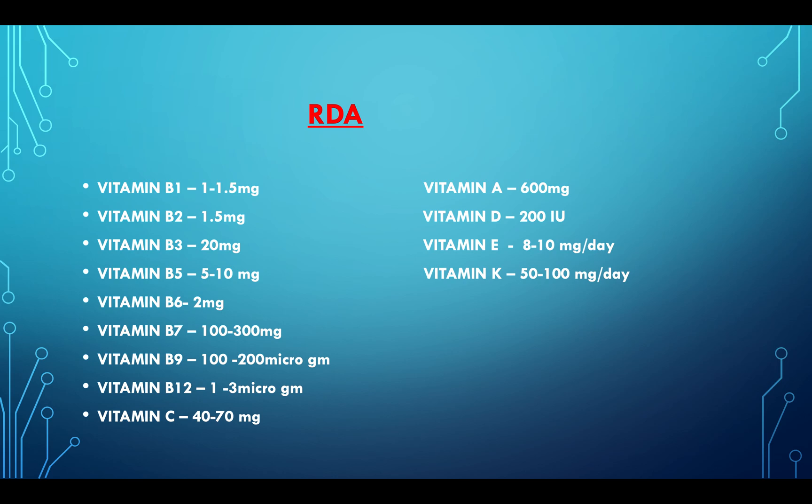Vitamin B12: 1–3 mg. Vitamin C: 40–70 mg. Vitamin A: 600 mg. Vitamin D: 200 IU in adults. Vitamin E: 8–10 mg per day. Vitamin K: 50–100 mg per day.